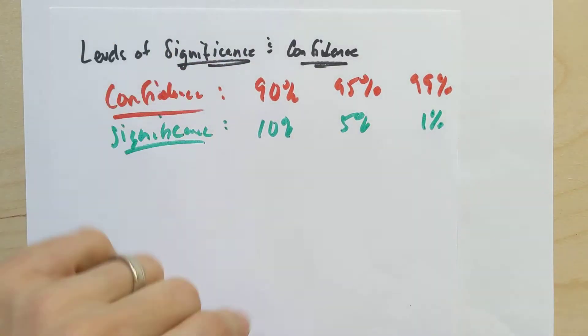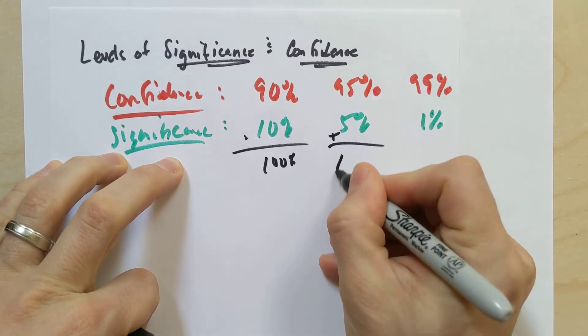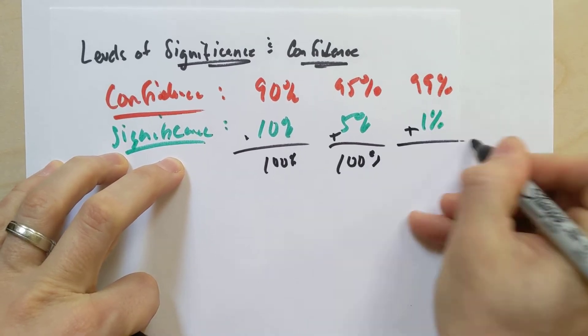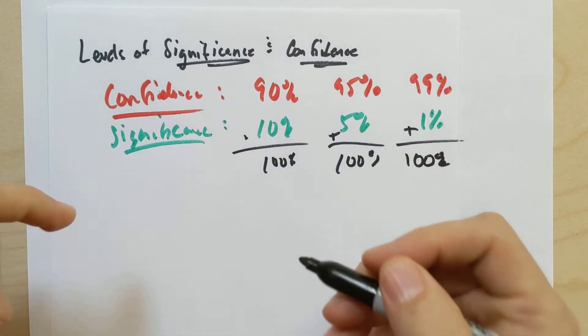I put these numbers in this order for a reason, and that's because if I was to add these two numbers, it adds up to 100%. If I was to add these two numbers, it adds up to 100%. And if I was to add these two numbers, they, of course, add to 100%.